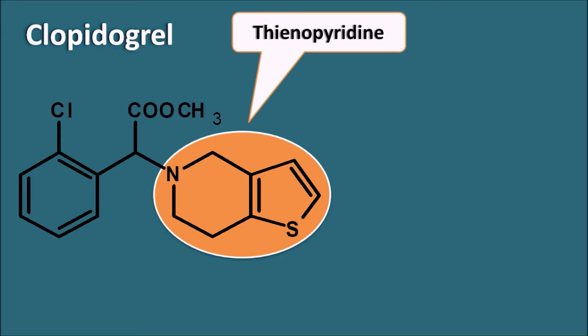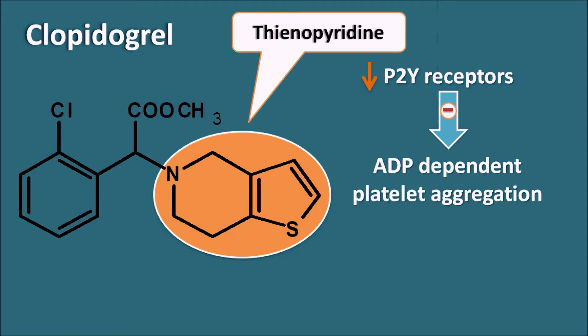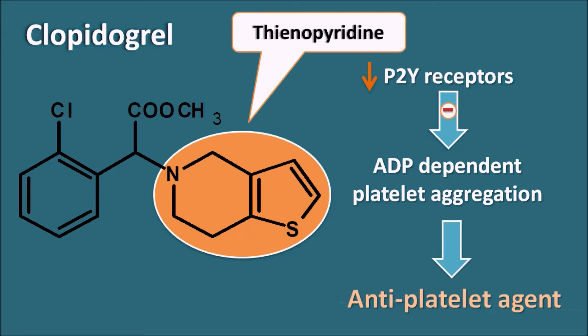How does clopidogrel act? Clopidogrel inhibits the P2Y receptors, thereby inhibiting ADP-dependent platelet aggregation. ADP is a mediator acting on P2Y receptors, which is blocked by clopidogrel. Once these receptors are blocked, platelet aggregation is inhibited — that is why clopidogrel acts as an anti-platelet agent.